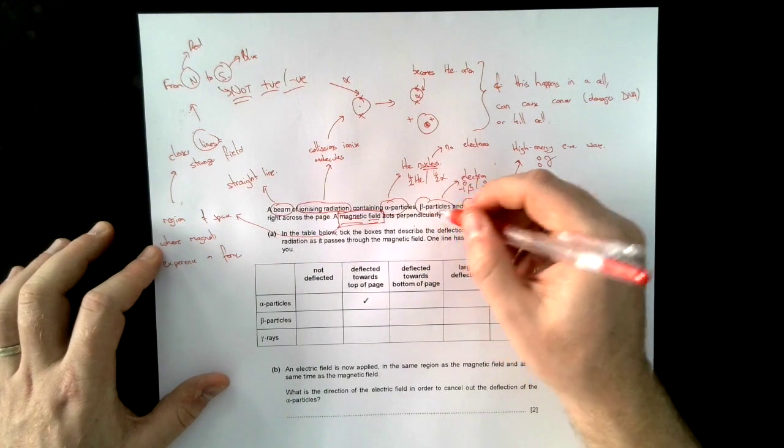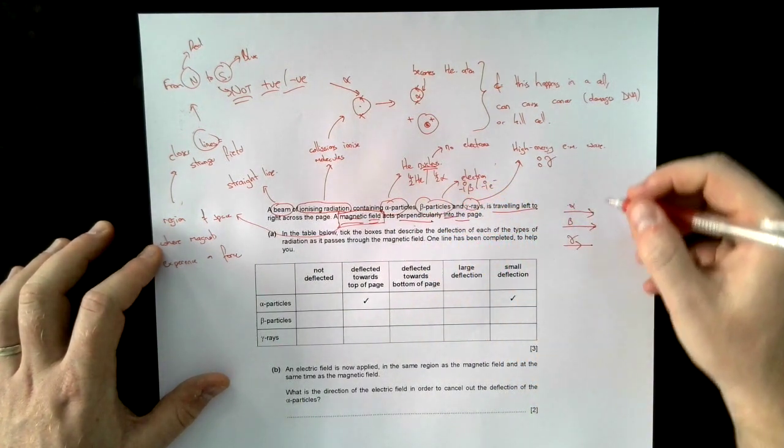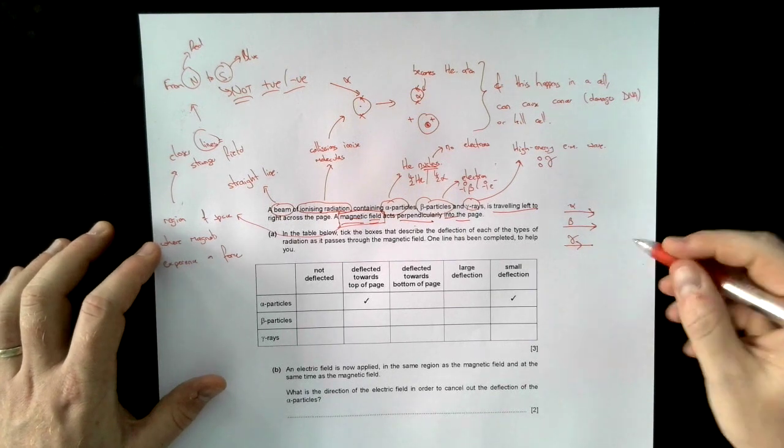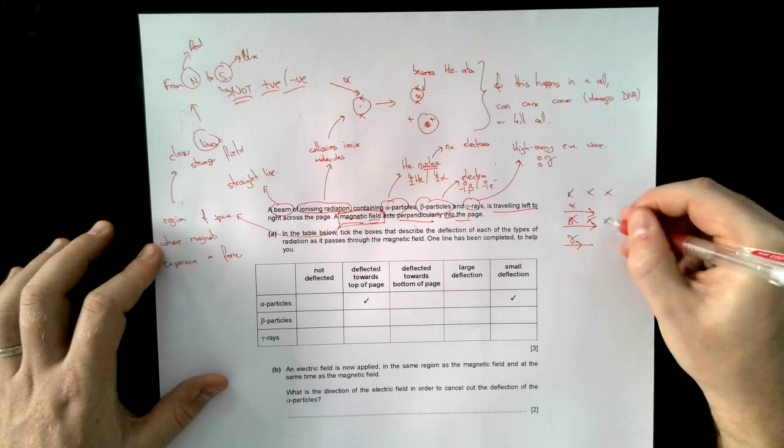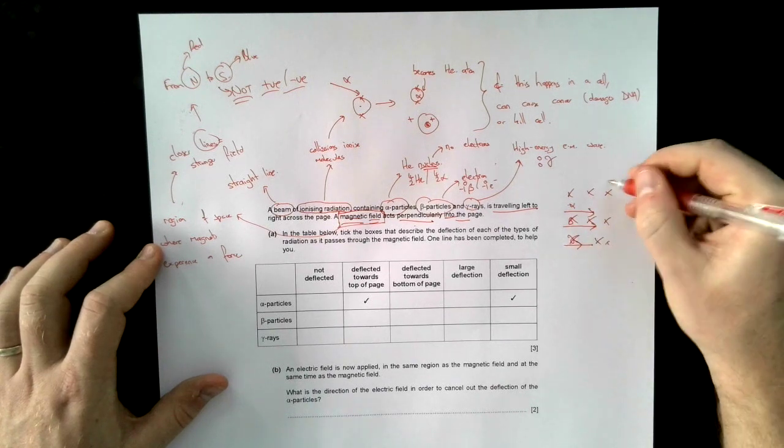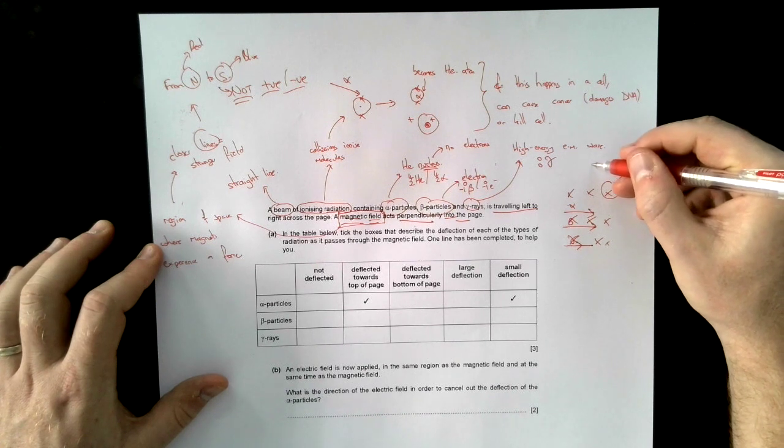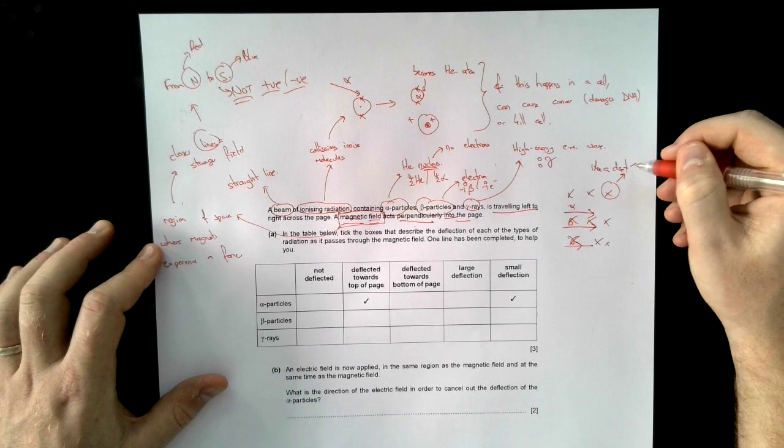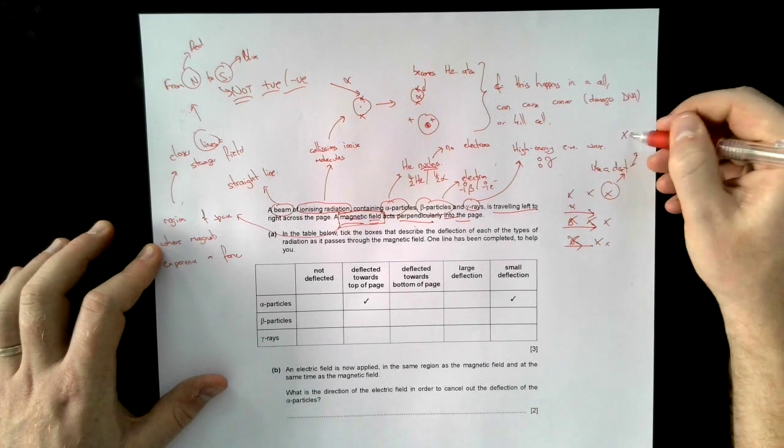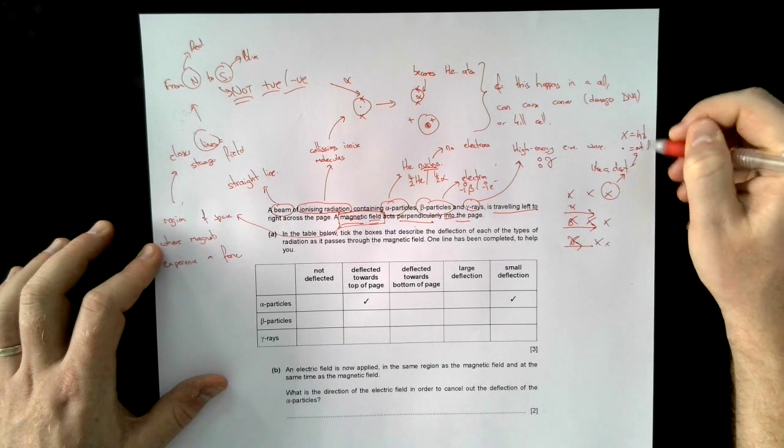This is a magnetic field acts perpendicularly into the page. So we could say, well, that's going to look, it's going to go into the page. So I might draw it like this. And then I could look at one of these arrows and say, remember, like a dot. And I can say that across means into. A dot means out of.